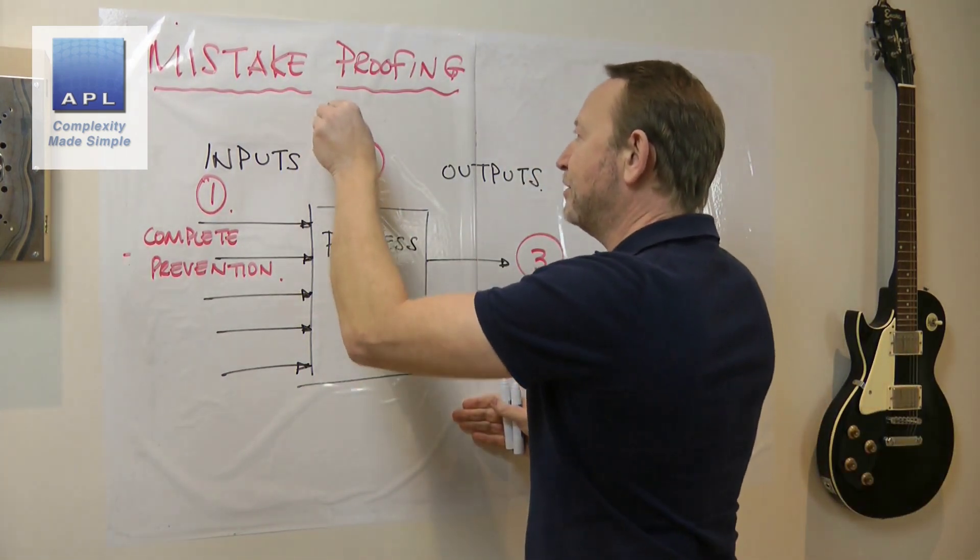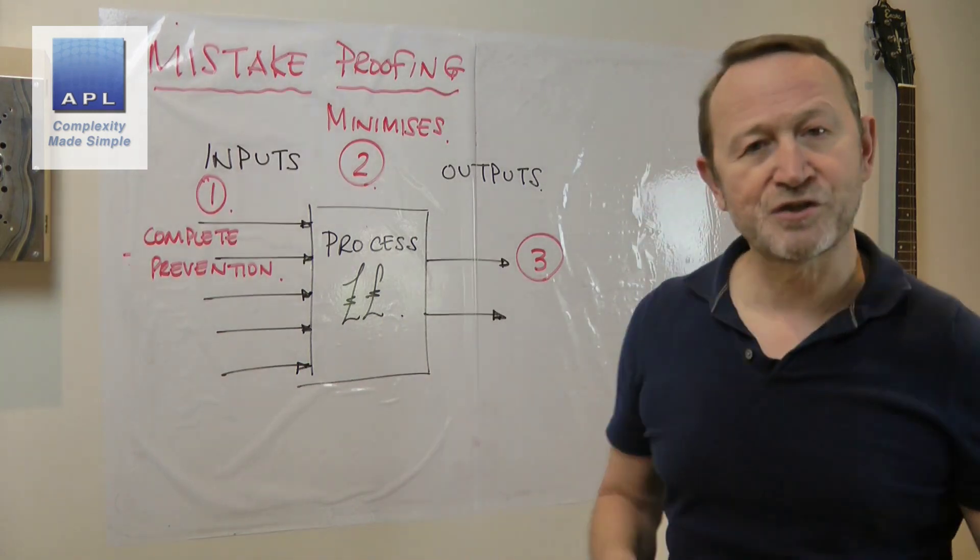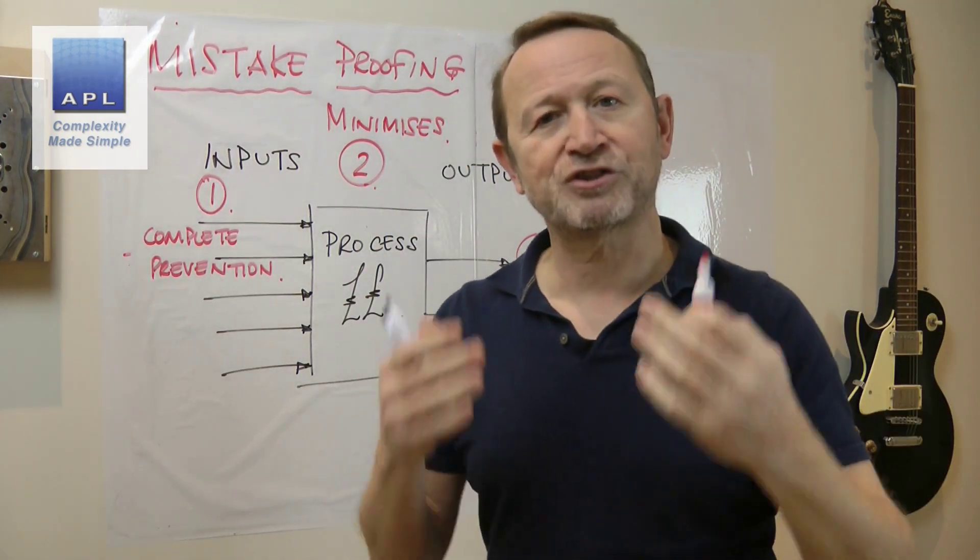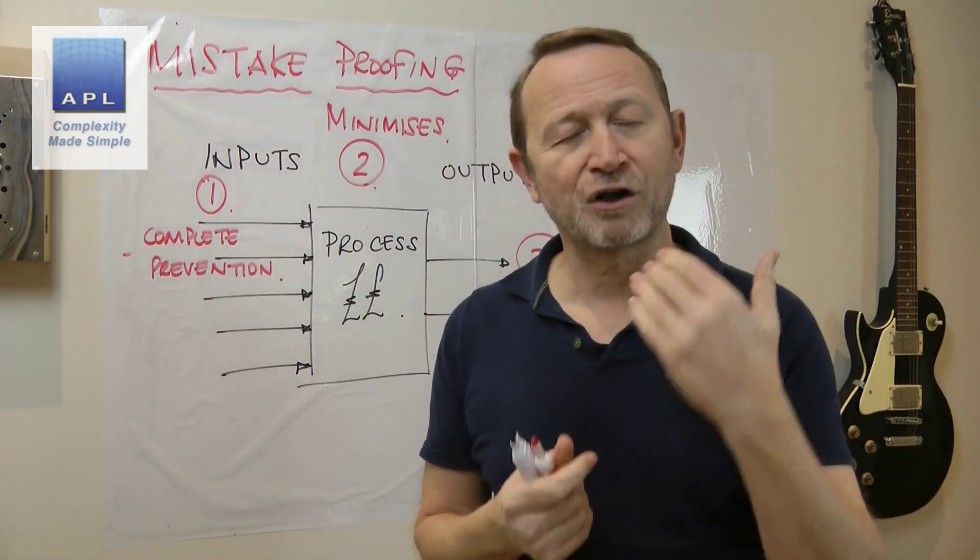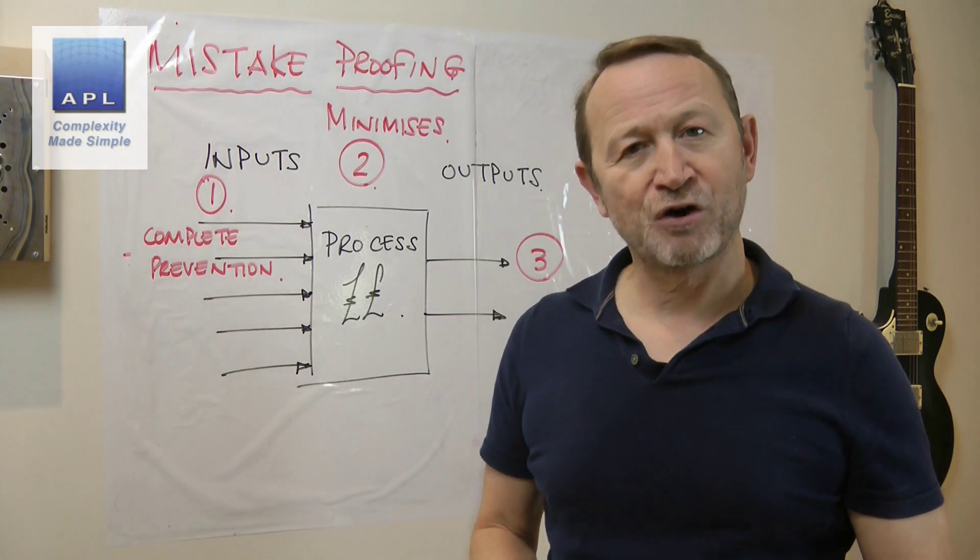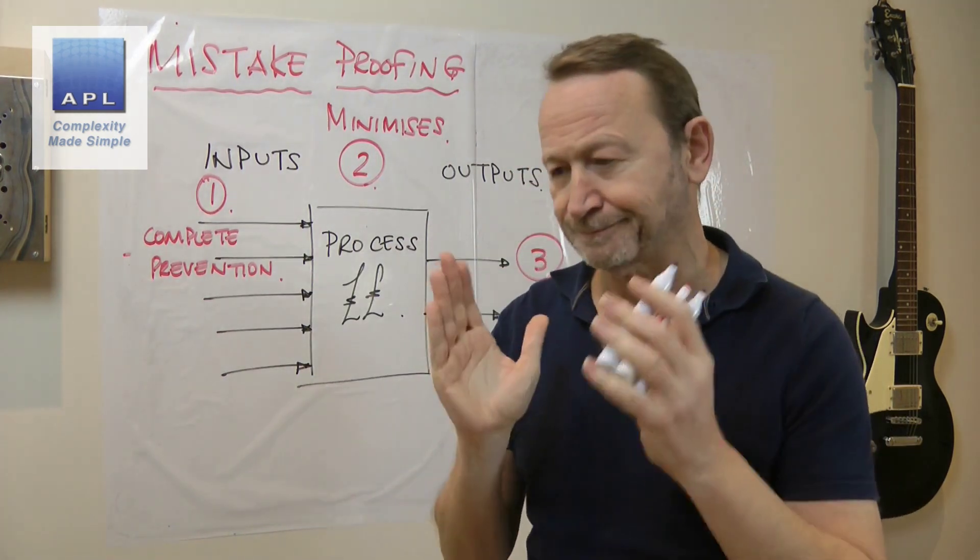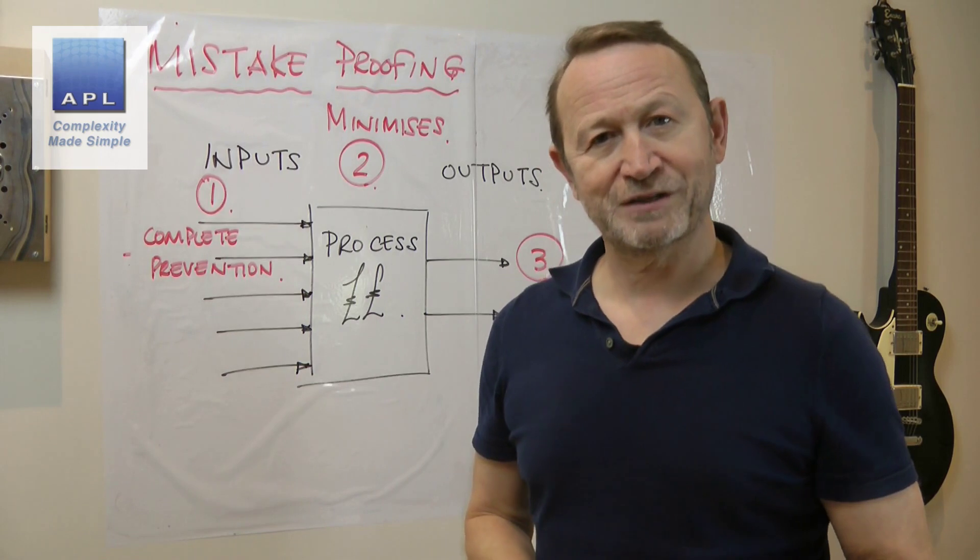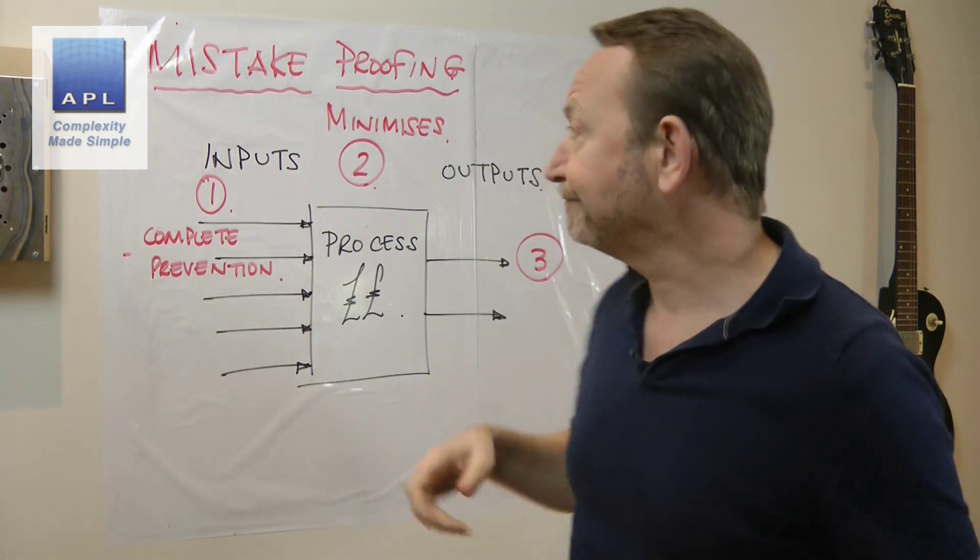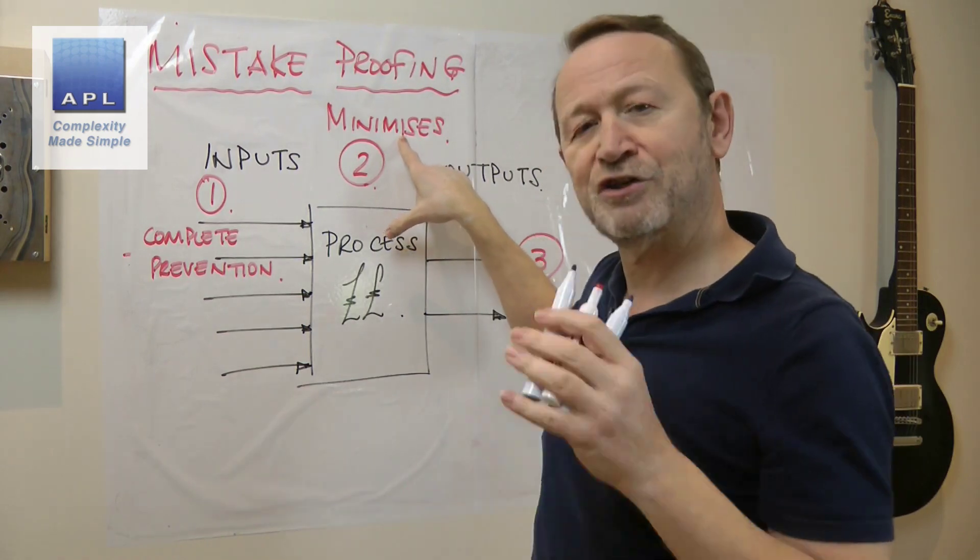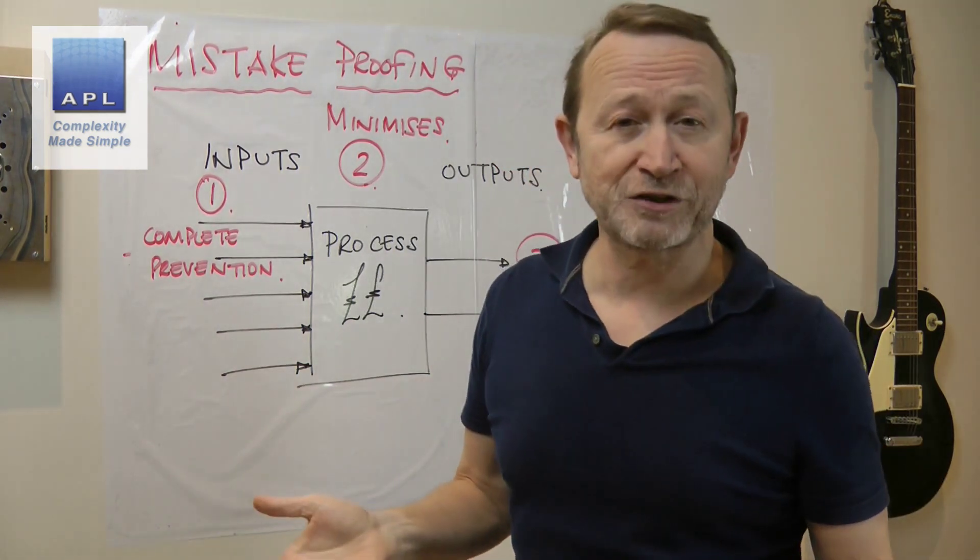Then we move to level two mistake proofing. Level two mistake proofing is not complete prevention. What this does is it minimizes the problem. It minimizes the problem, keeps your defects to a minimum if you are going to get an error in your system. The great example of this one would be an alarm on a temperature controller. Let's say on your process you have a temperature which the process has to meet, let's say it's a heat treatment process. You have a temperature that the process has to meet and you put an alarm so that if it goes below that temperature you alarm the system out. Of course, when the alarm goes off everything that's inside the system at that point might have to be reworked.